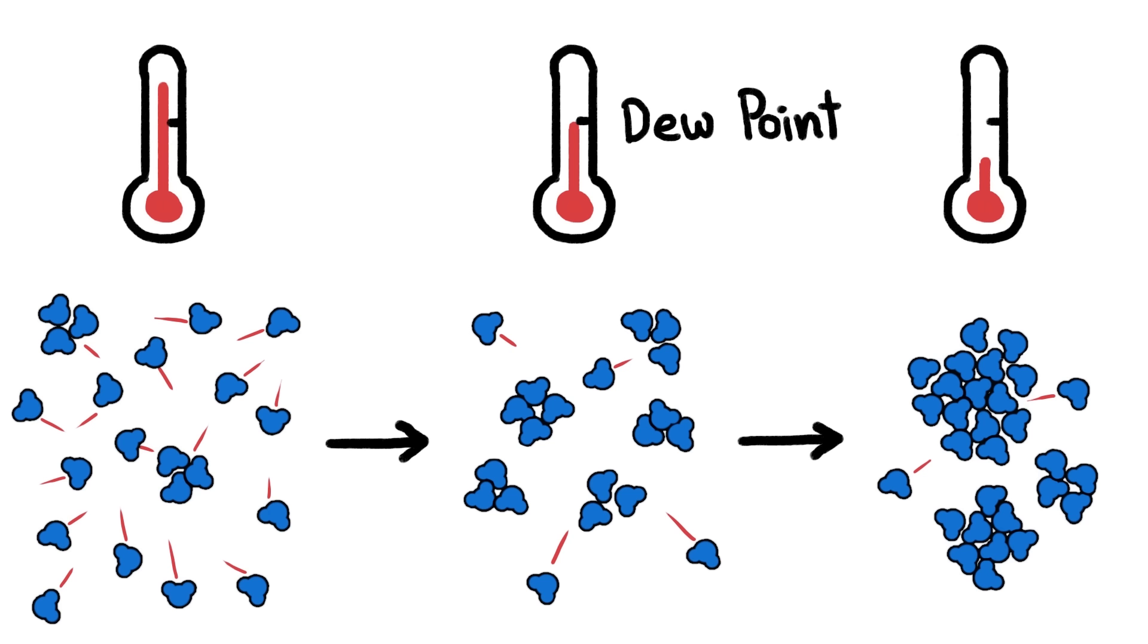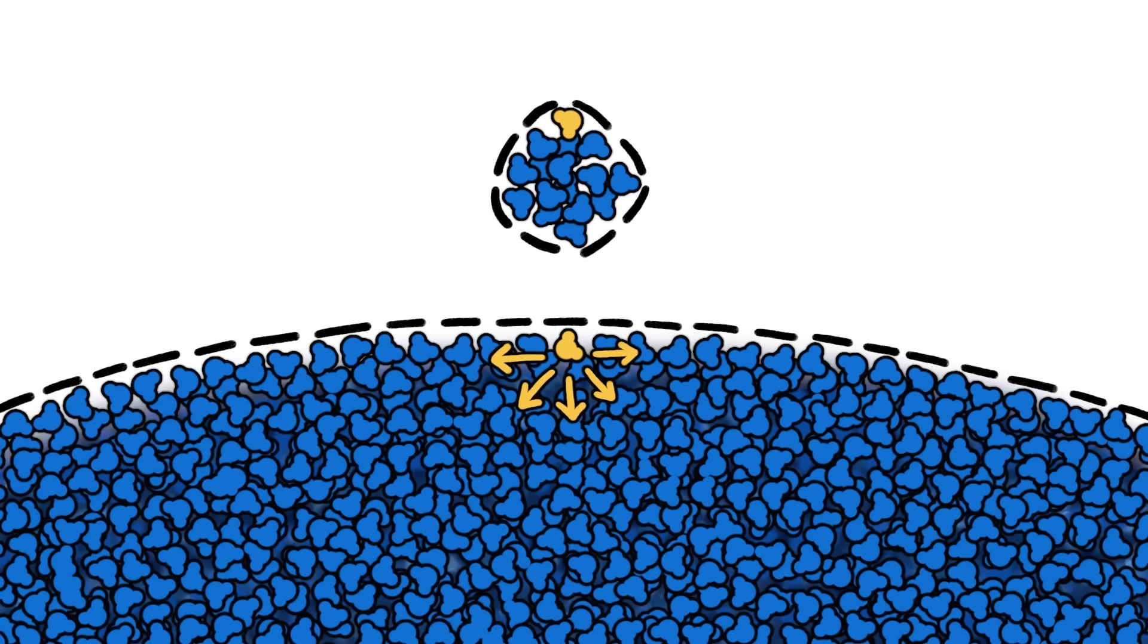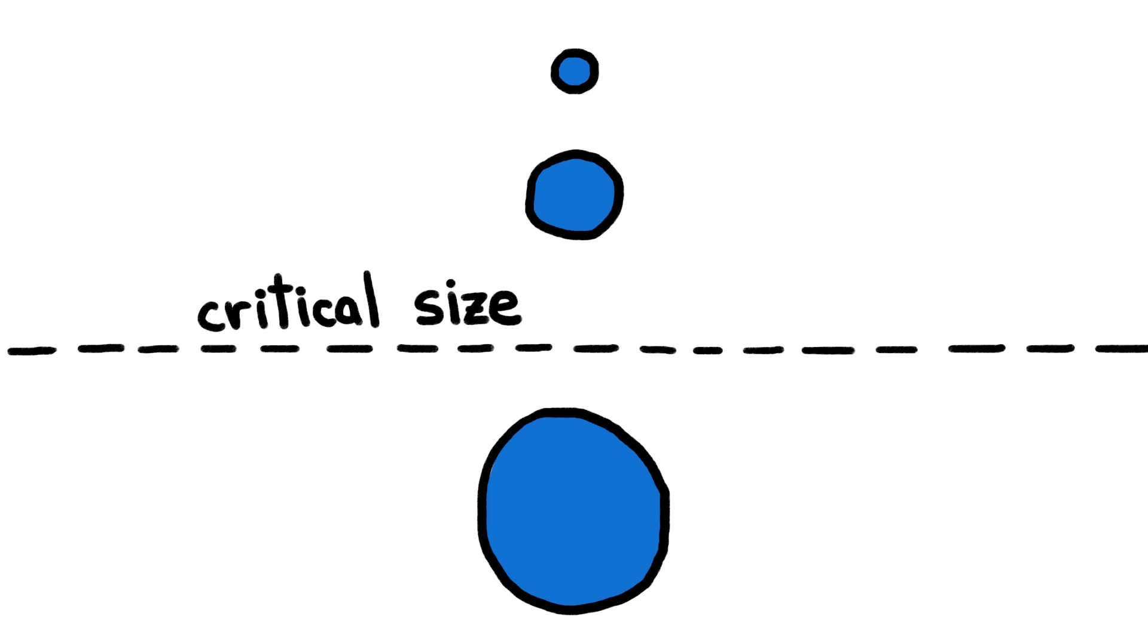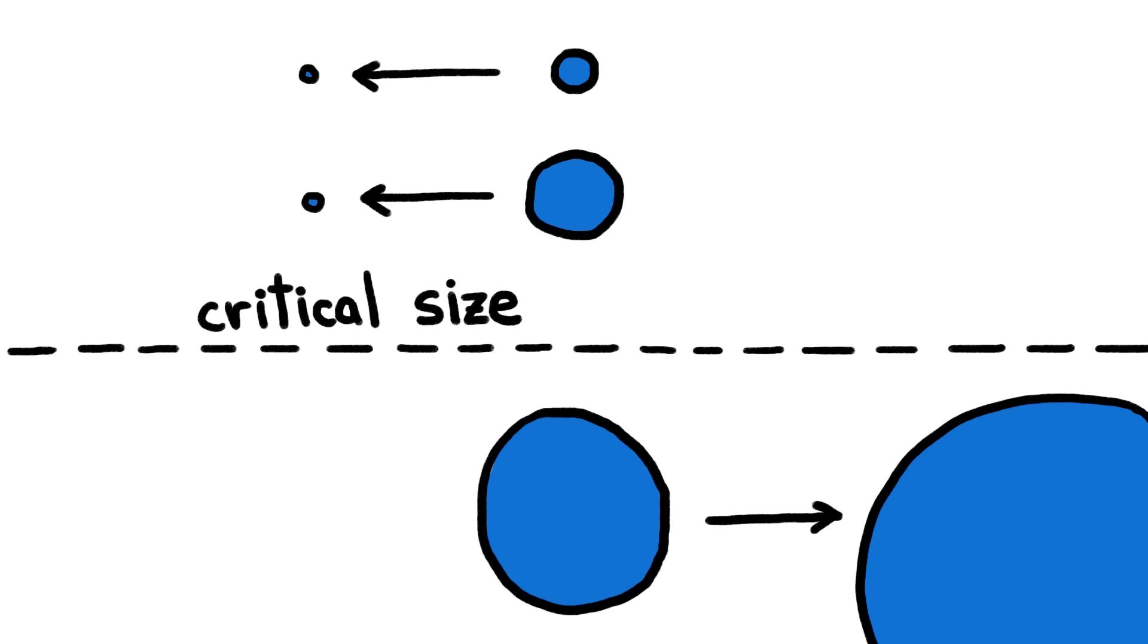But actually, that's only true if the cluster is big to start with. If it's too small, its surface is so curved that the molecules on the outside have few neighbors to bond to, which makes them easy to break off. So the cluster as a whole has higher chances of losing molecules than gaining them, even below dew point. Which means that up until a certain critical size, a cluster's chances of shrinking are better than its odds of growing.